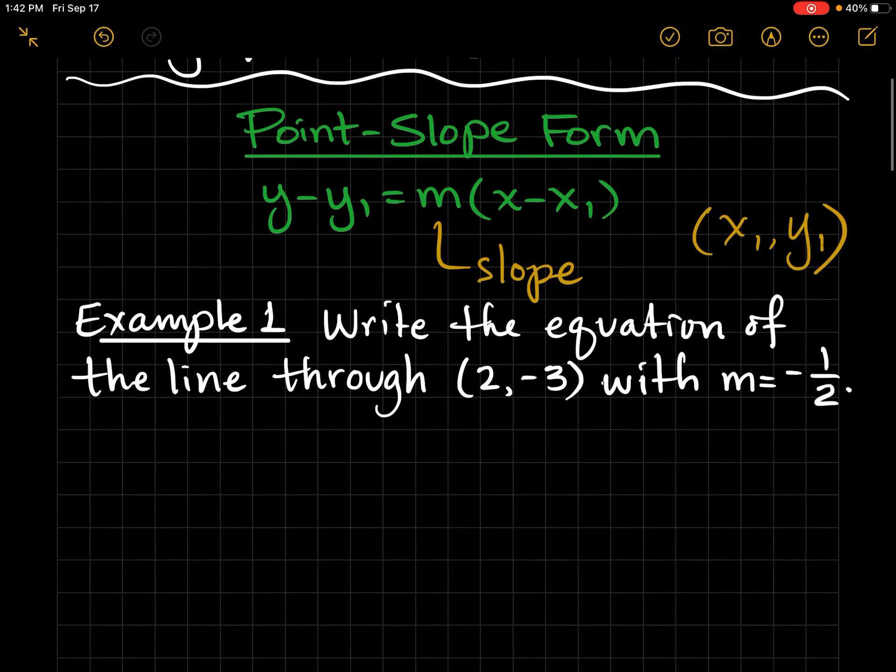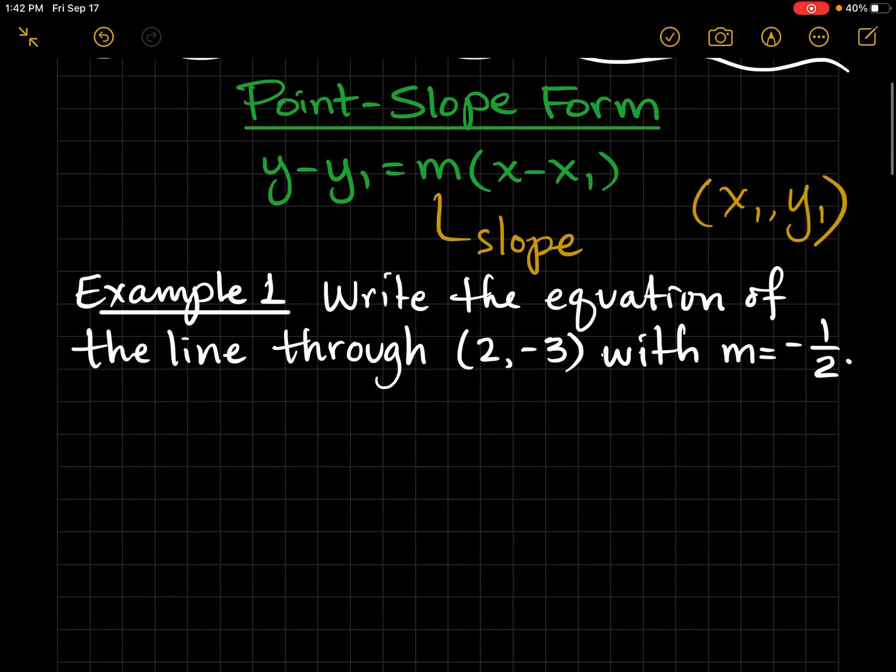It's y minus y1 equals m times x minus x1. m represents the slope, and the x1, y1 is just any point that's on the line. Let's go ahead and see how it works. First of all, remember that you can always pause the video and take time to try the questions first.